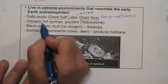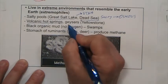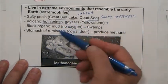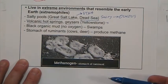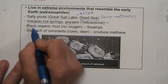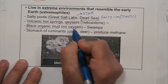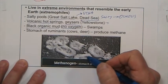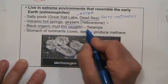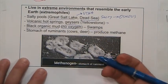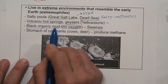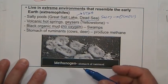They also live in very hot places like volcanic hot springs and geysers, like those in Yellowstone National Park. They also live in places with absolutely no oxygen, like swamps — the soil in swamps is really black and smells bad, and that black organic mud with no oxygen is where you find this kind of bacteria.